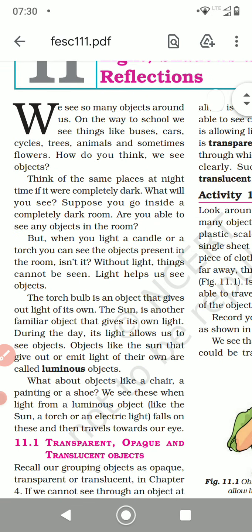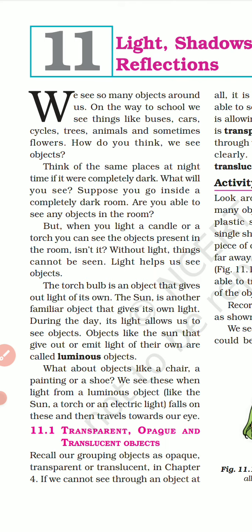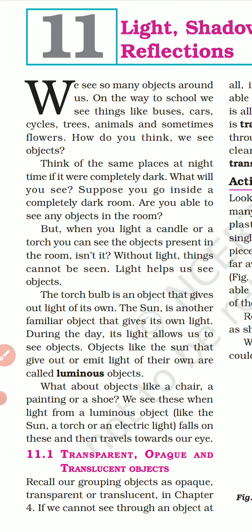We see so many objects around us. On the way to school, we see things like buses, cars, cycles, trees, animals, and sometimes flowers. How do you think we see objects? Think of the same place at night. If it were completely dark, suppose you go inside a completely dark room — are you able to see any object? No. But when you light a candle or a torch, you can see the objects present in the room. So without light, things cannot be seen. Light helps us to see objects.